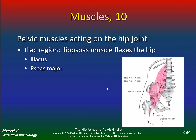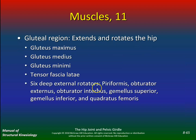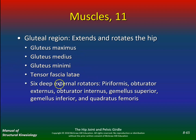Pelvic muscles acting on the hip joint: you've got the iliacus and psoas major. The gluteal region extends and rotates the hip — you've got glute max, glute medius, glute minimus, and the TFL.